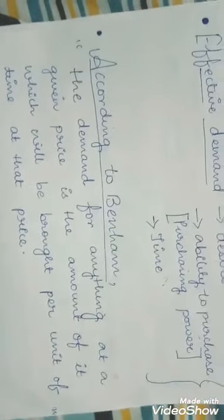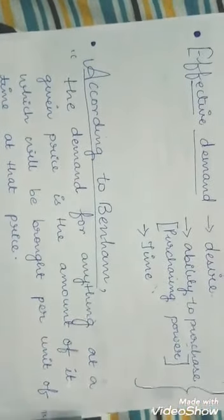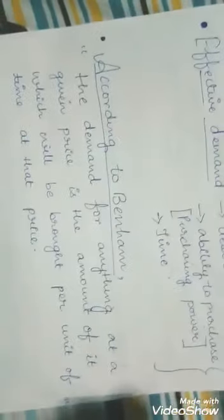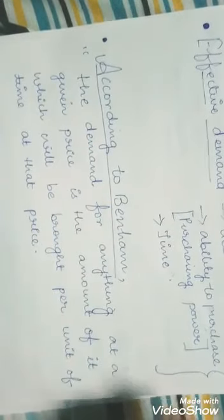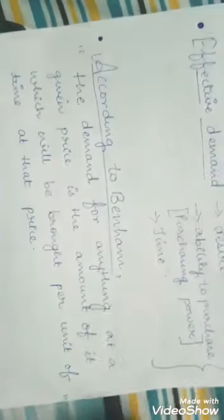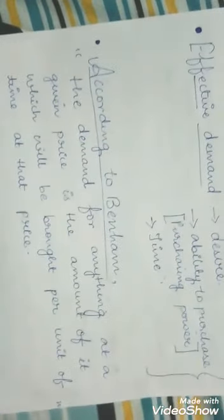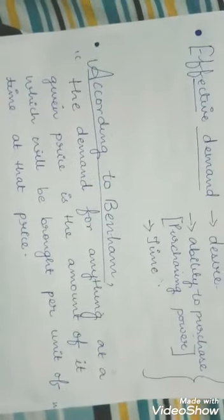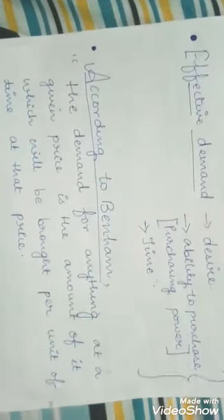So children, in today's video, we saw what demand means. When we have desire for a commodity at a particular price and time, that is known as demand. But desire is not enough to fulfill our want. With that, we need ability to purchase, that is purchasing power. Remember, when these two things are in our hand—desire and ability to purchase—then that situation is known as effective demand.